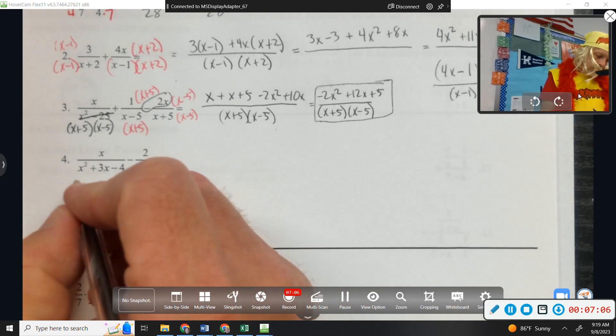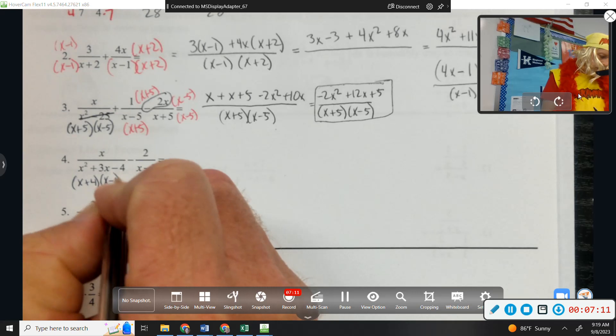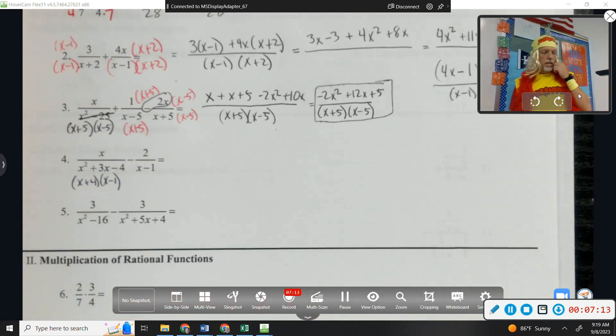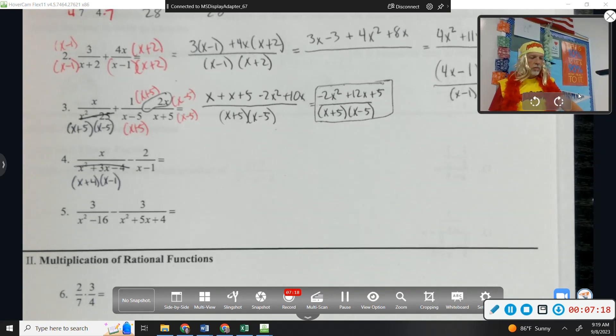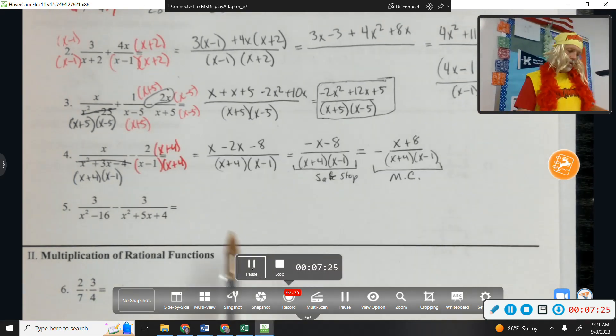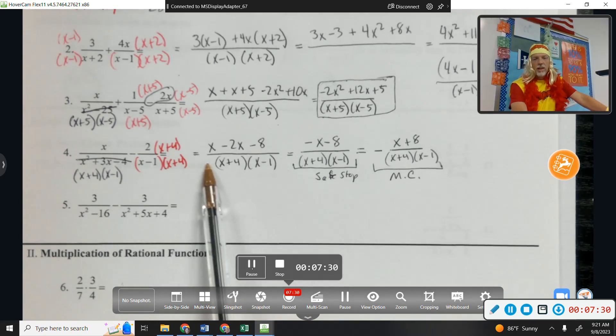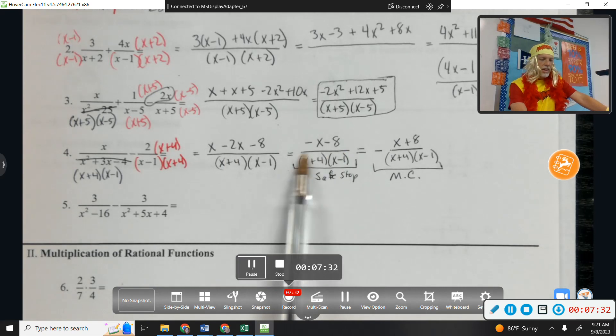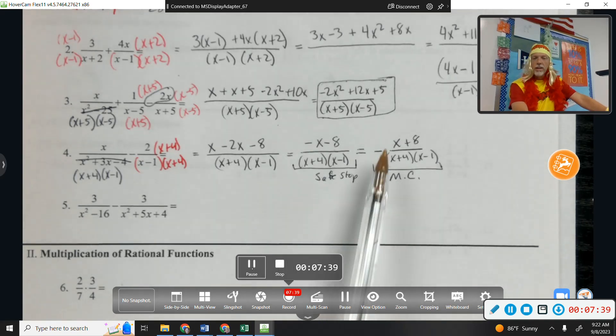Number 4, we'll factor the bottom. X plus 4, X minus 1. That's nice, because that means they're close to having a common denominator. What does the second term need? It just needs an X plus 4. So why don't you see if you can finish that one? So again, multiply top and bottom by X plus 4 to make the denominators match. Careful with the minus sign. And be alert. If you're working the problem, you stop here on your own. If you look at answer choices, be careful, because they might take a negative out front.